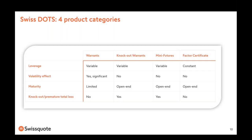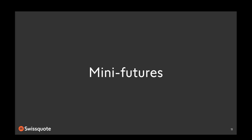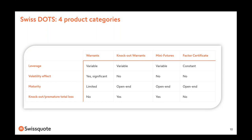The peculiarity of mini futures and the differences from other products are listed here. Mini futures benefit from variable leverage and have no volatility effect, so the pricing is much easier to understand compared to warrants because there is no time decay, no volatility effect, and no maturity — no expiry date as happens for warrants. There is also a built-in stop loss mechanism: if the stop loss level is touched, there will be a premature expiry of the contract.